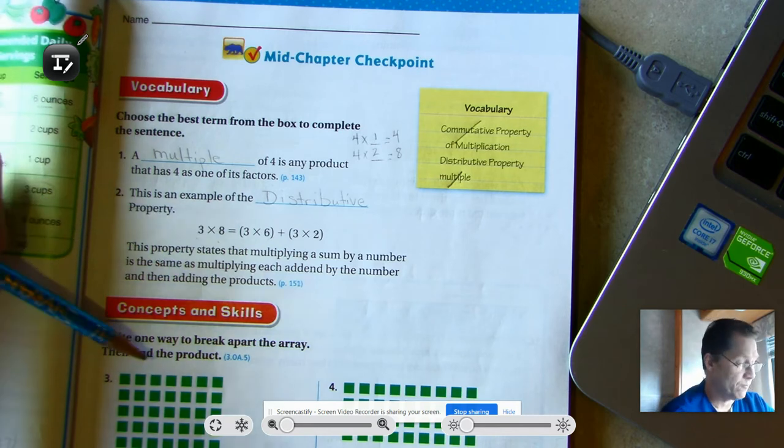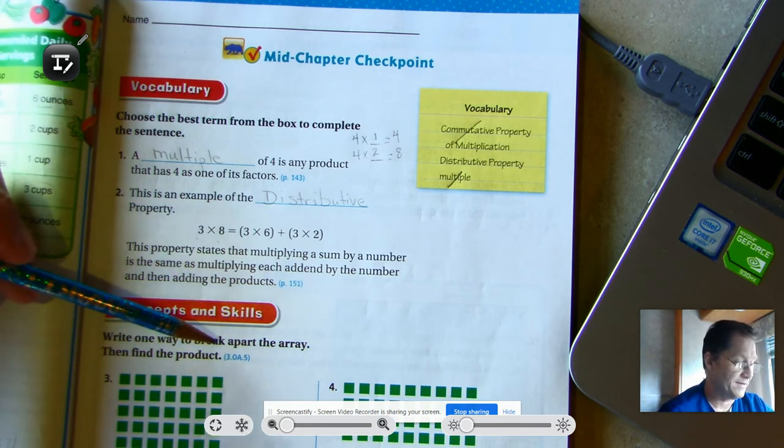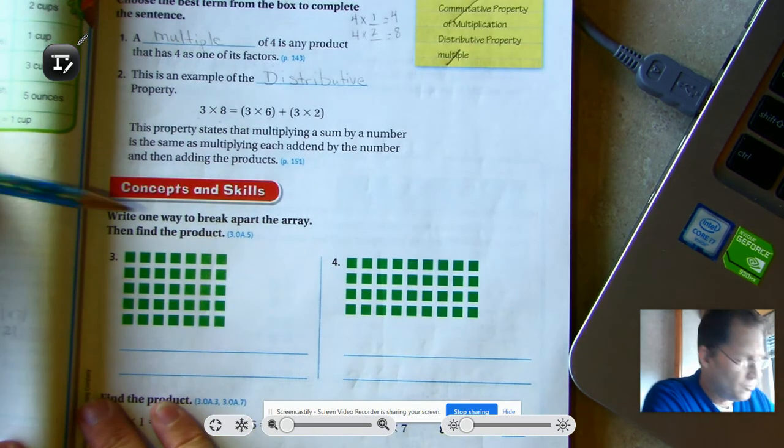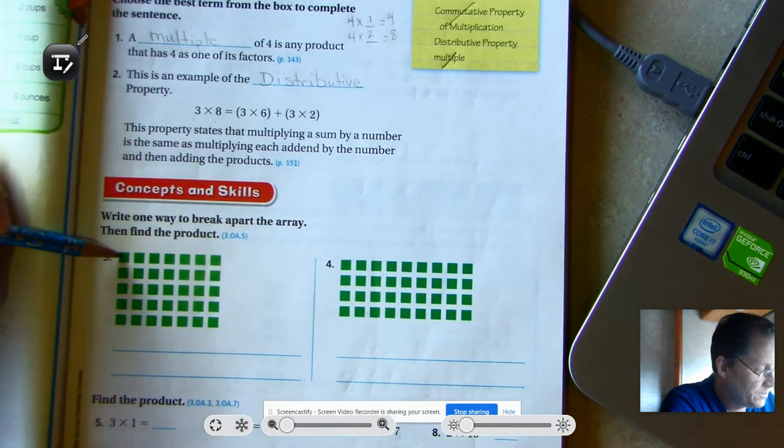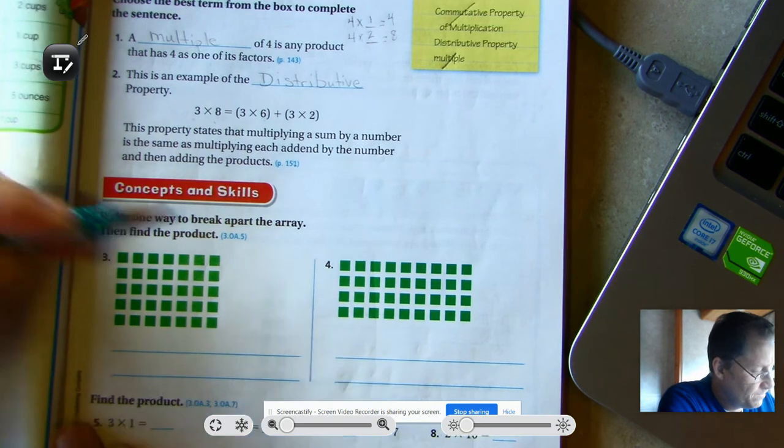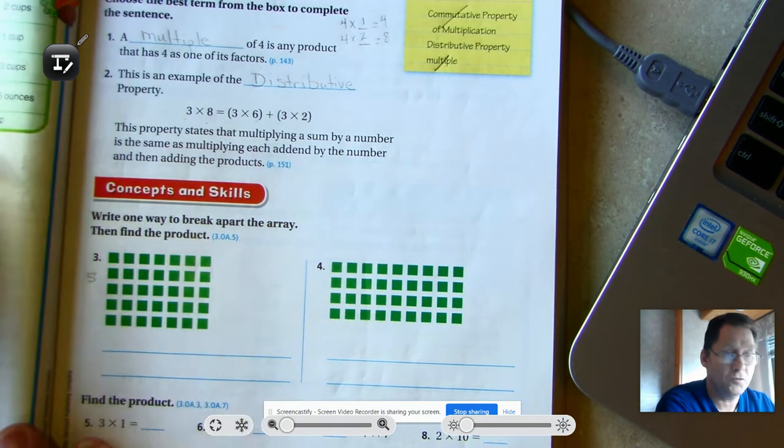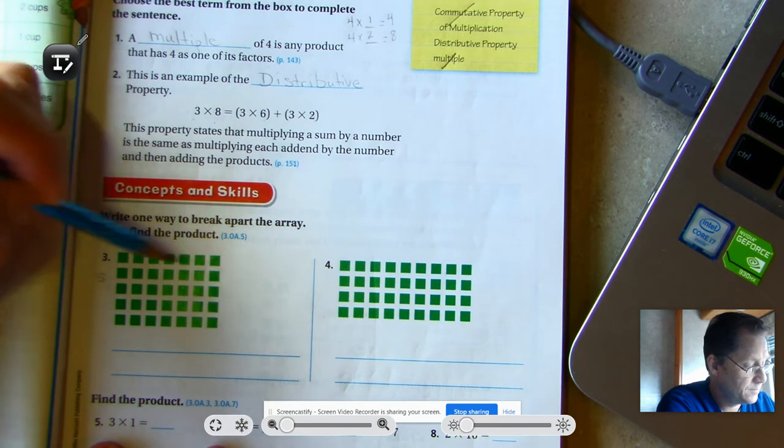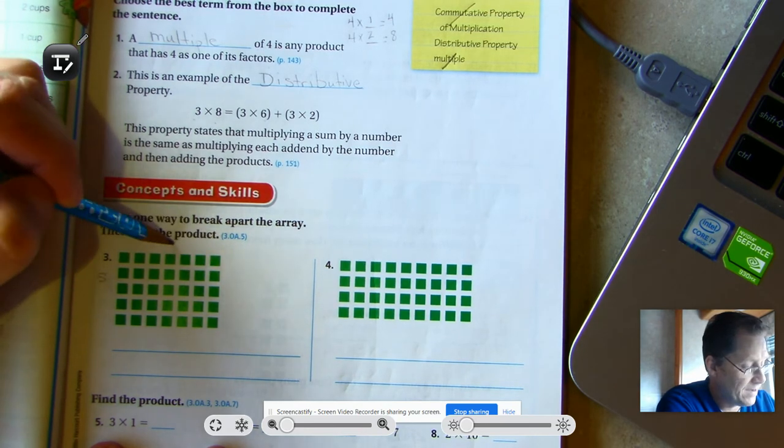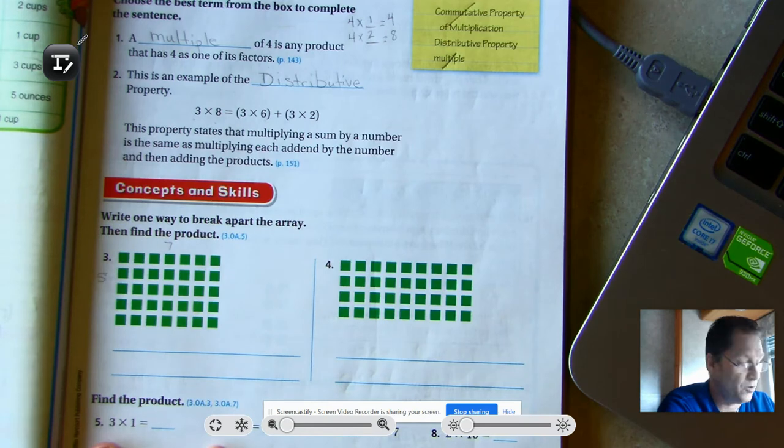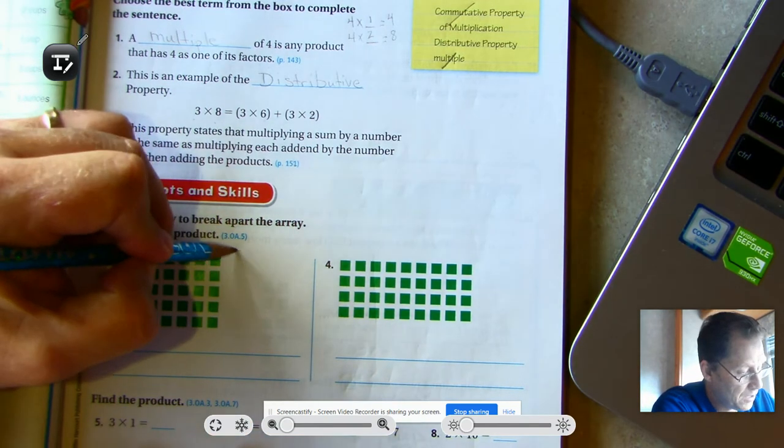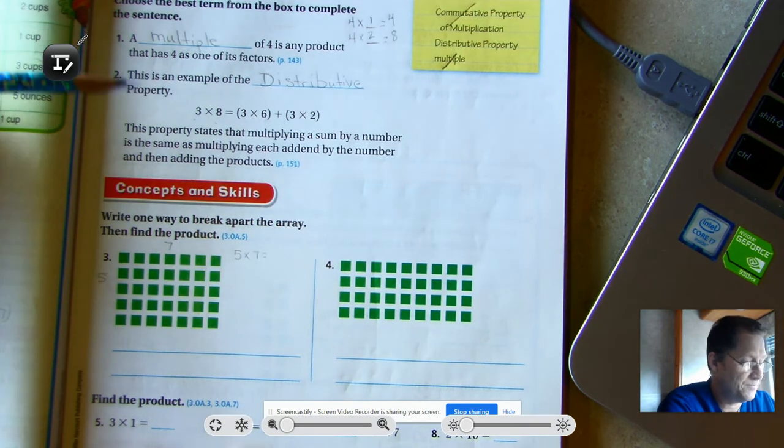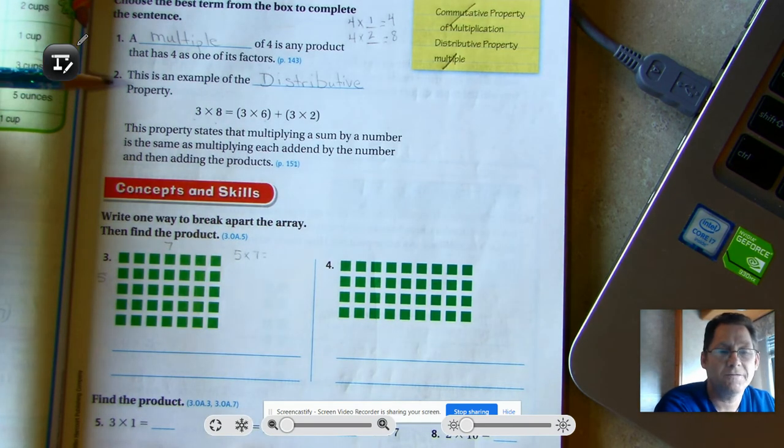Number three. Write one way to break apart the array then find the product. So in this array we have one, two, three, four, five rows. And we have seven in each row. So our problem is five times seven.